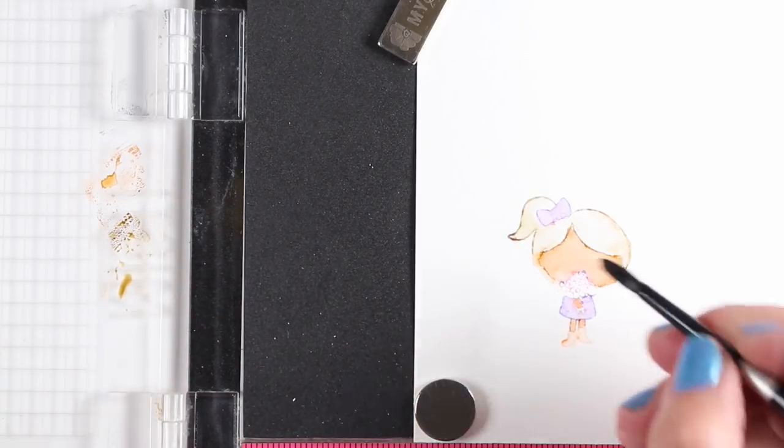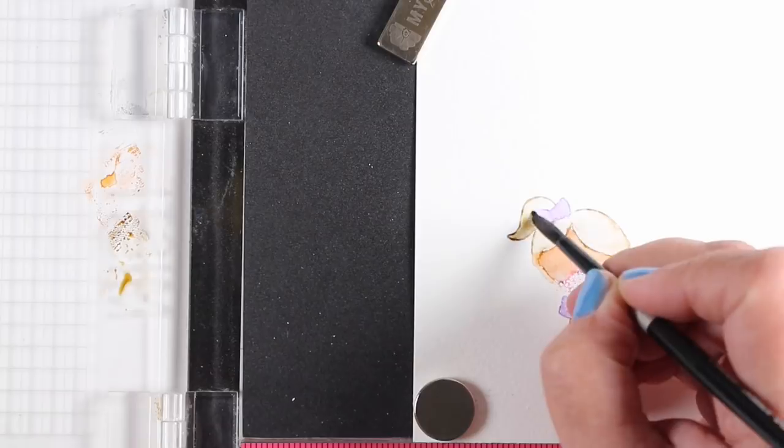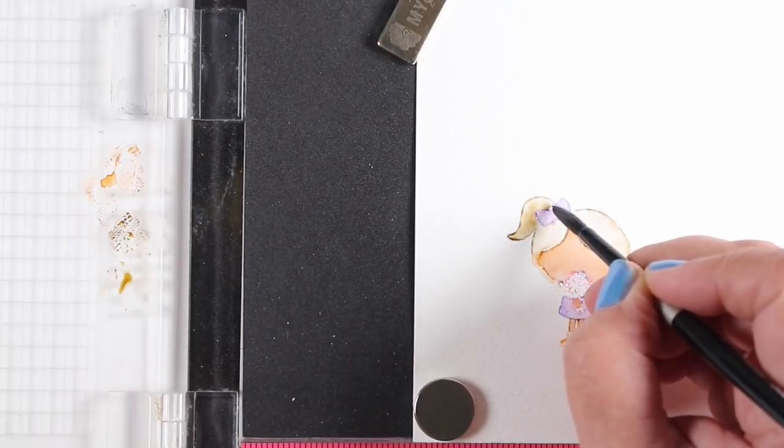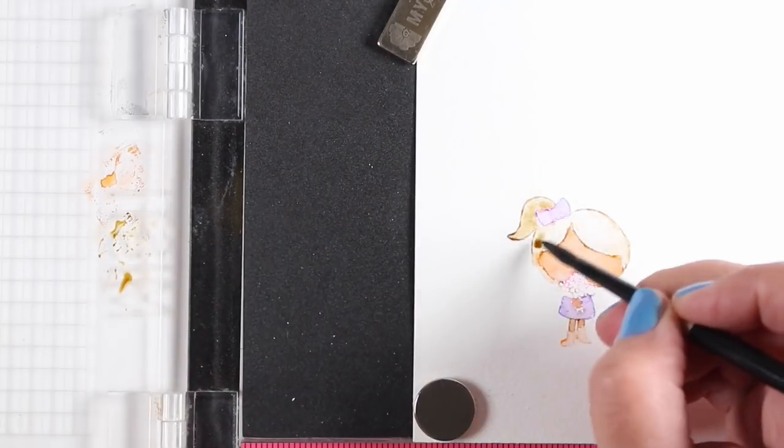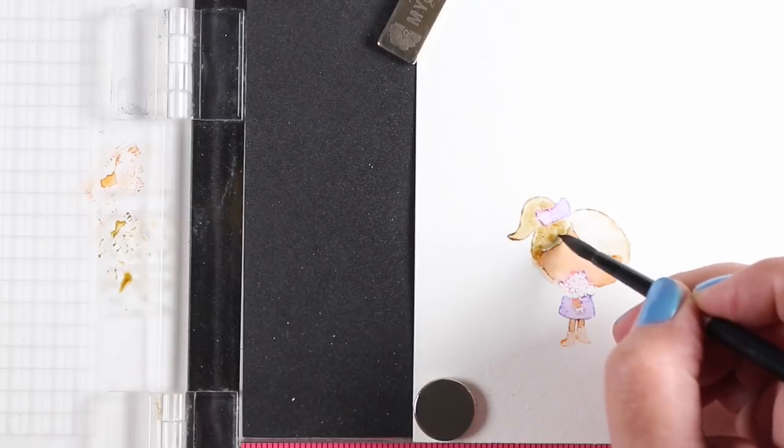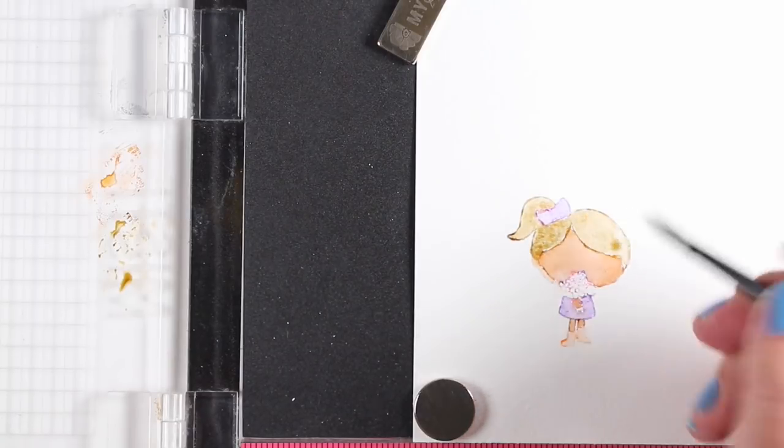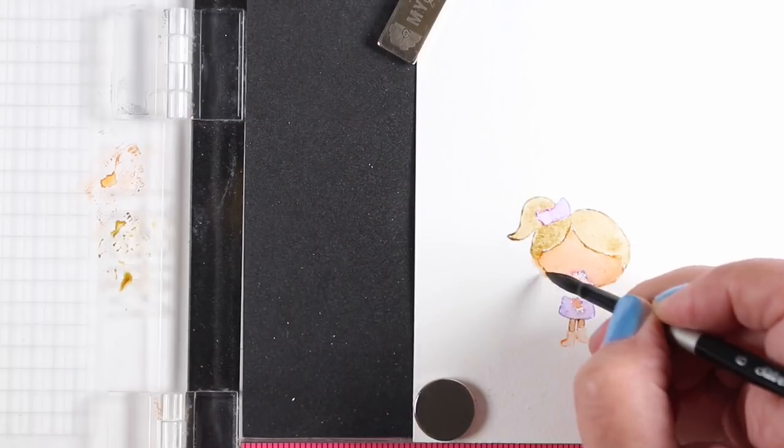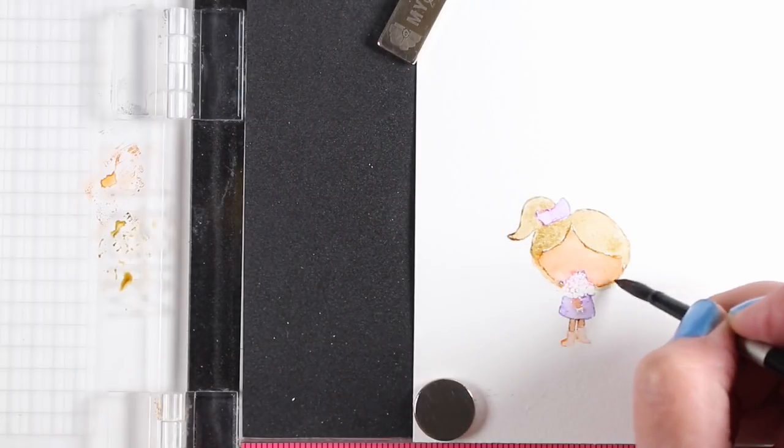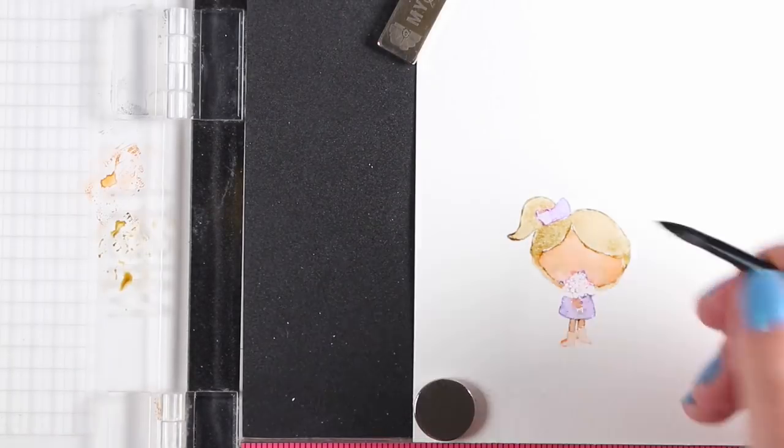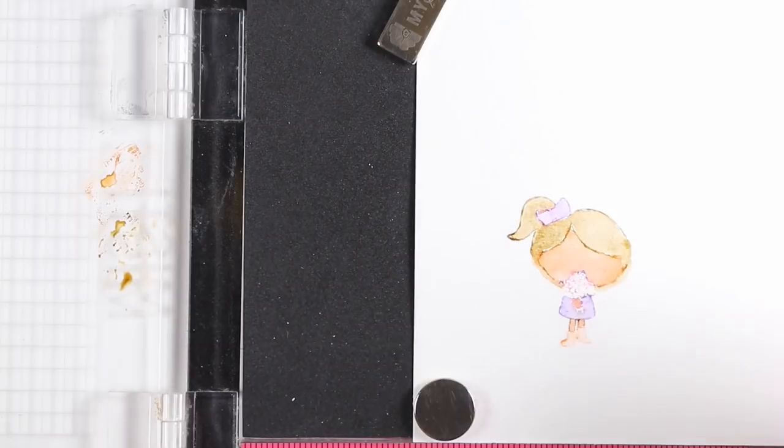But you can also take a little one like this and add some yellow and give her blonde hair or kind of whatever color you'd like. So you don't necessarily have to stick with the color that you've stamped her in, but you can just paint it in as well using your brush and a little bit of scribbled marker.